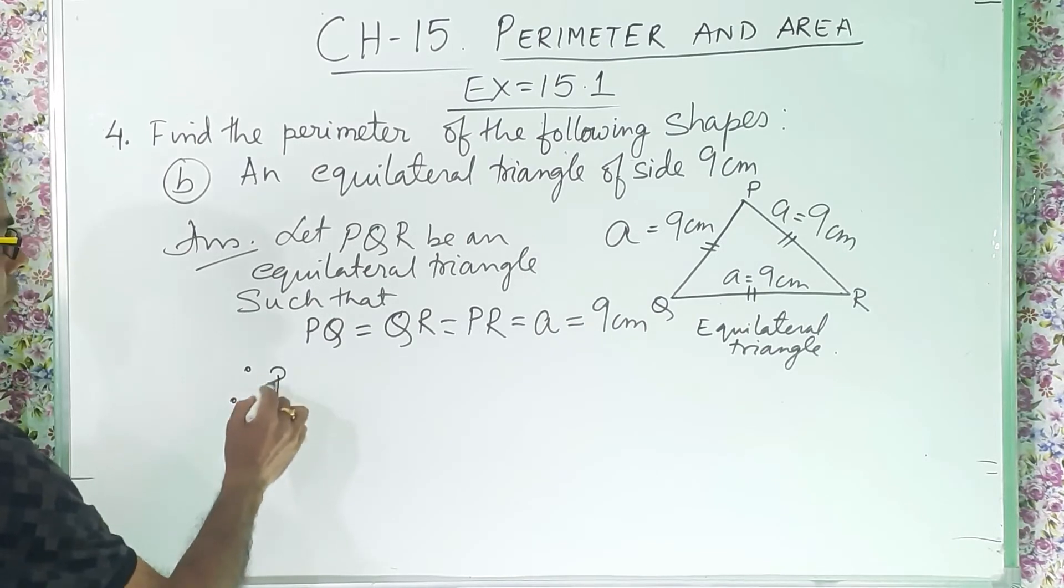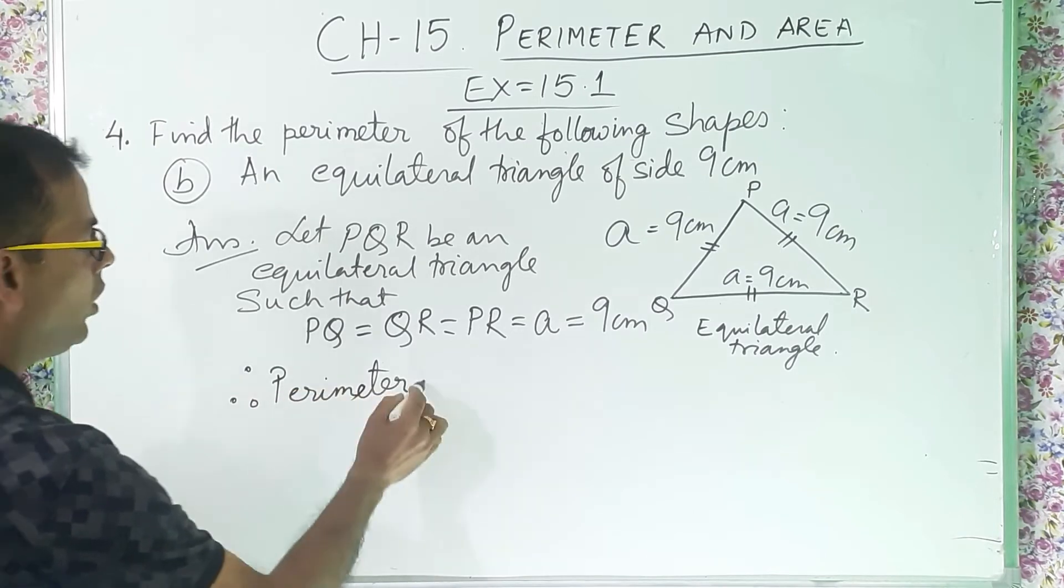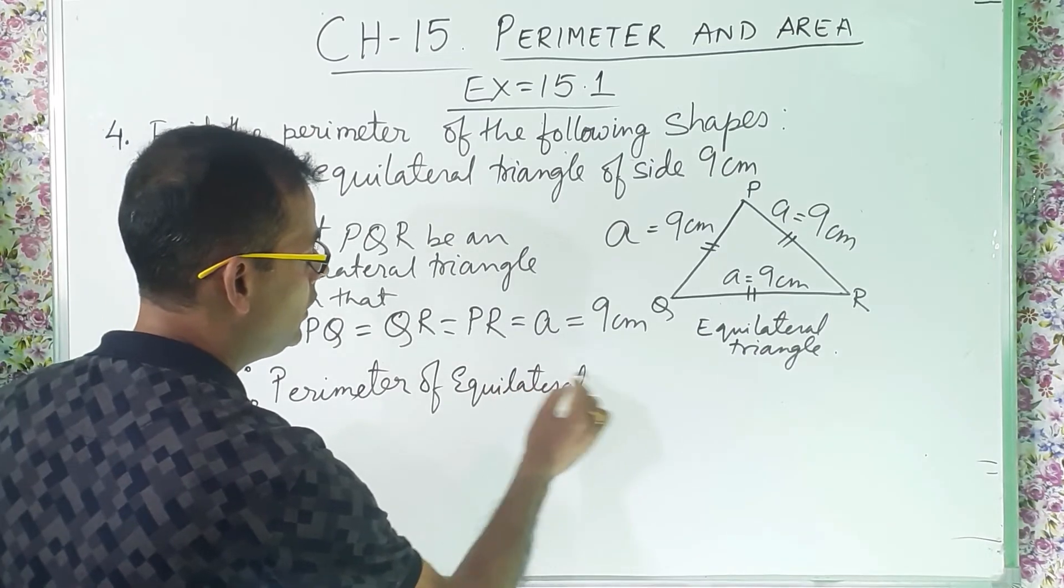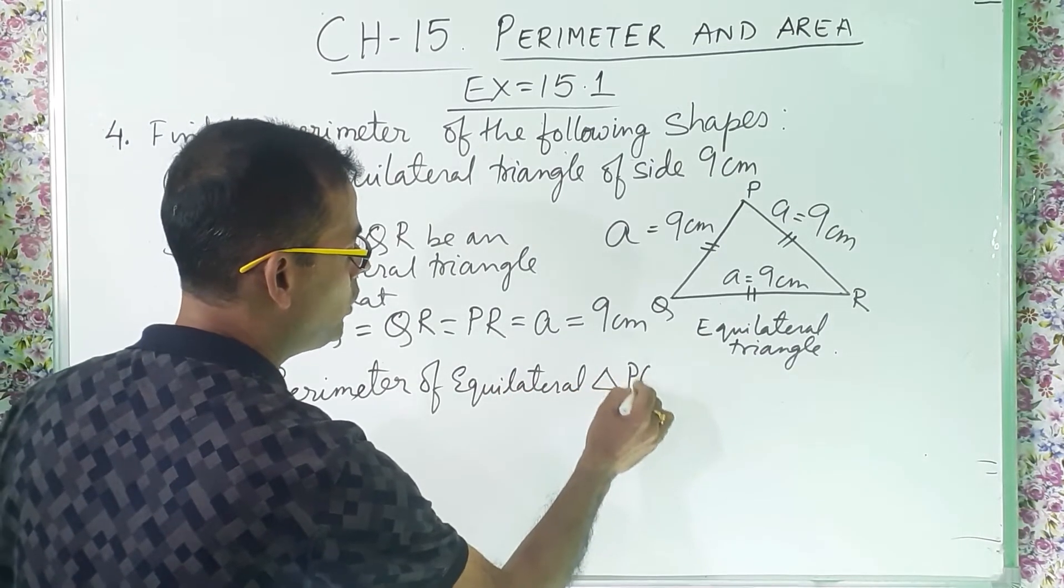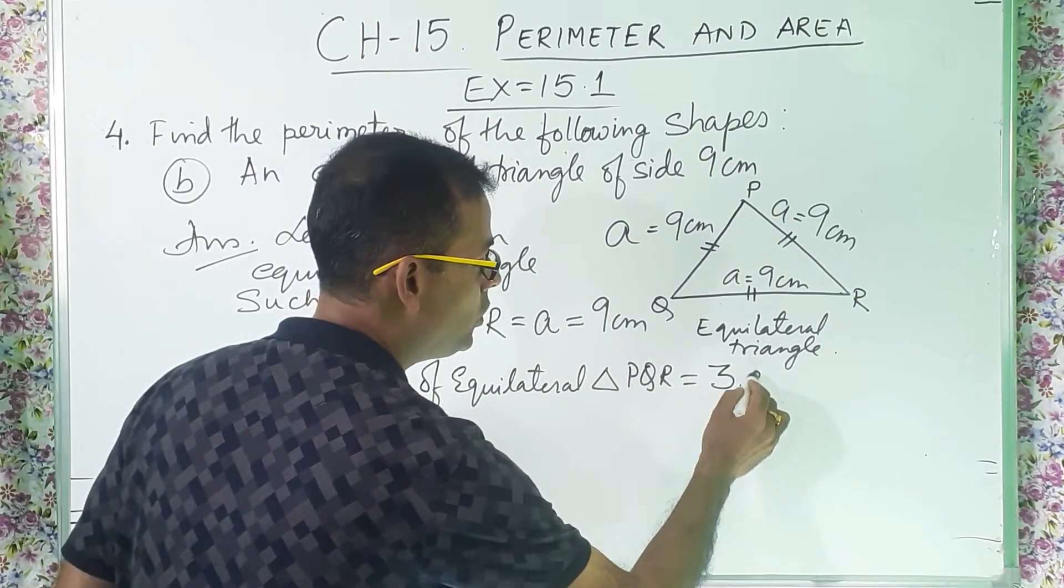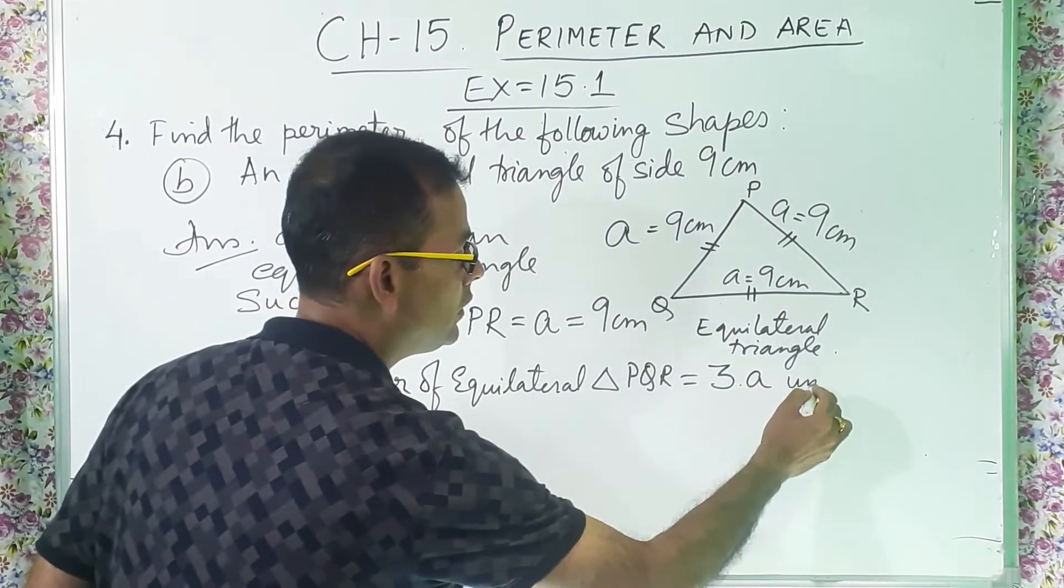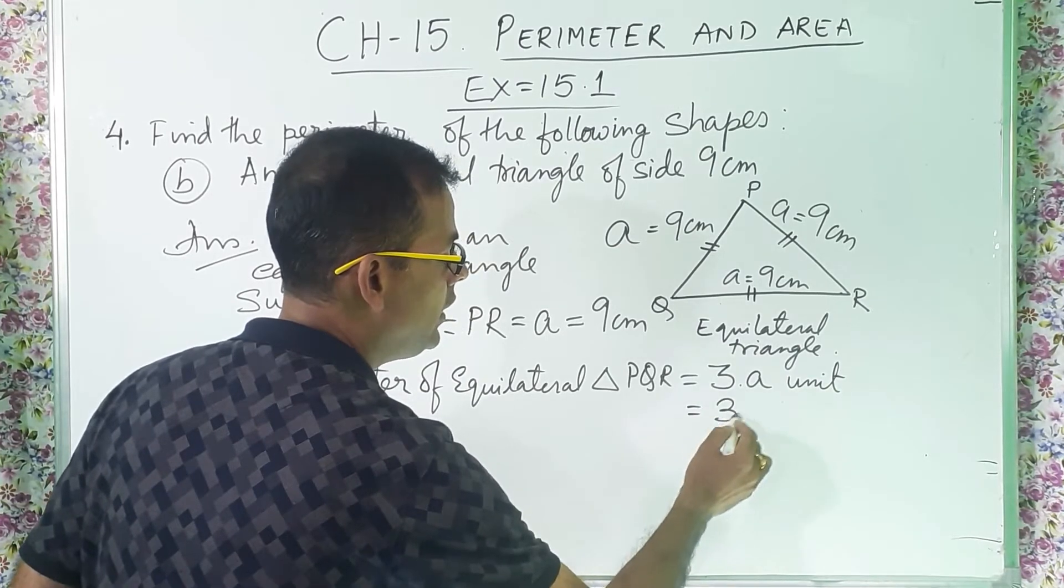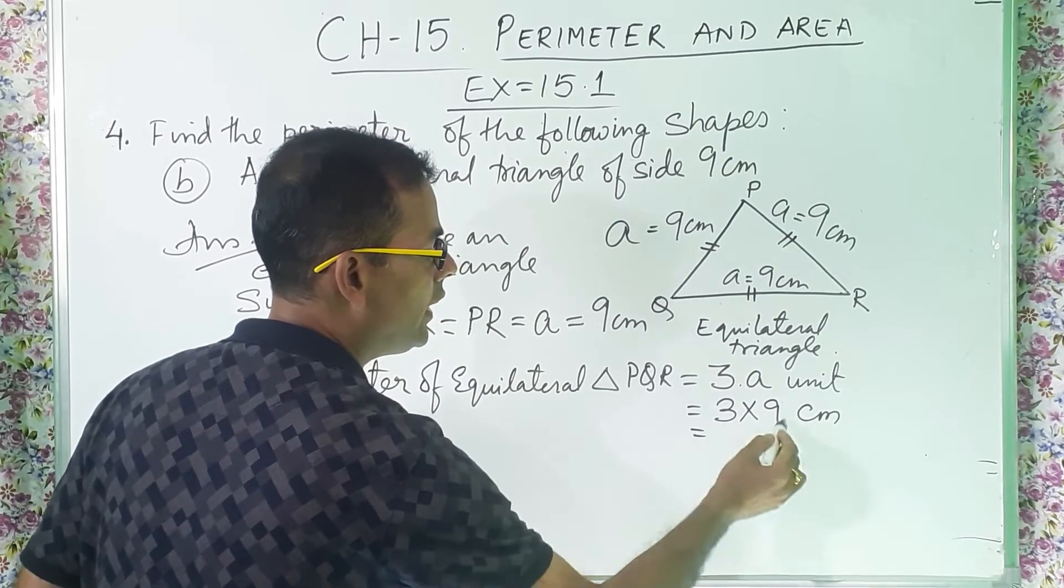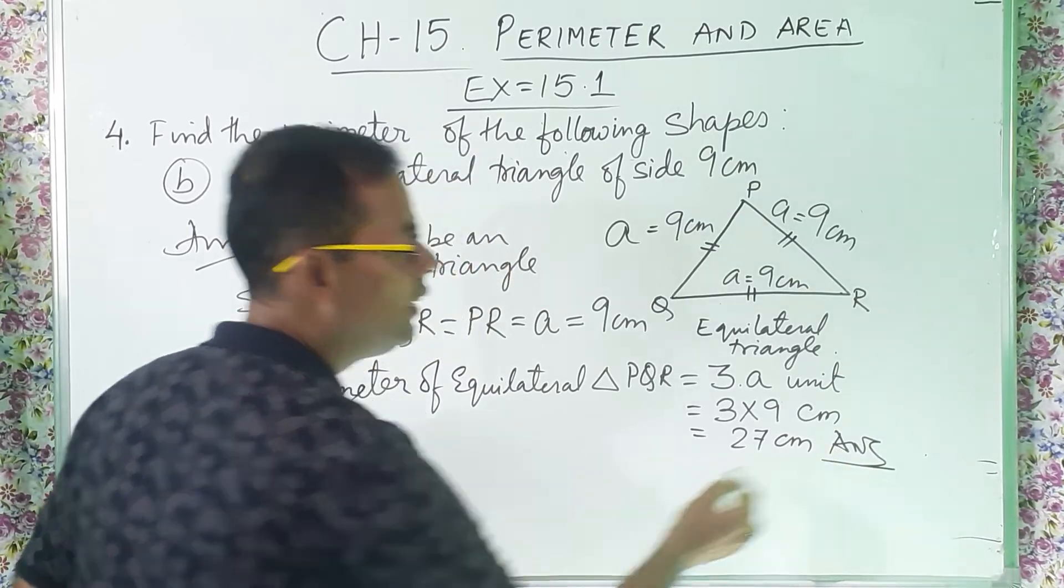Therefore, perimeter of equilateral triangle PQR equal to, the formula is what? 3 into a or 3 into side also, unit. So 3 into a is how much? 9 and it is centimeter. 3 nines are 27 centimeter and this is the answer.